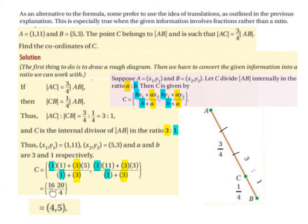So we end up getting 16 over 4, 20 over 4, which simplifies to (4, 5). So the point C is (4, 5).